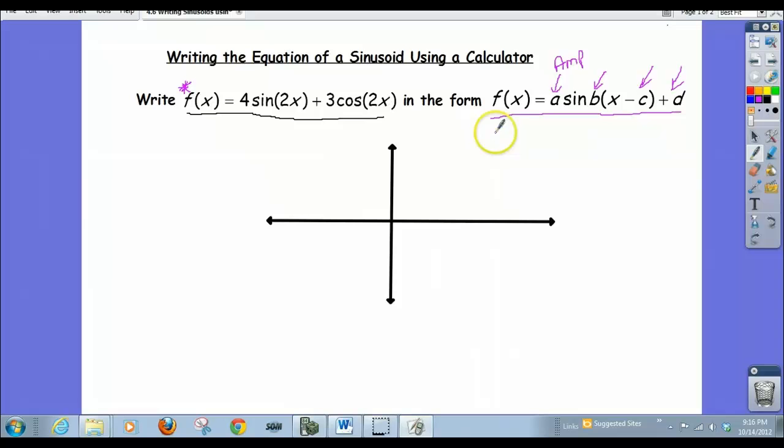So, if I'm going to write this as a sine graph, then it's going to be written as f of x equals, so I only need to know my A value. I'm writing it as a sine. I need to know my B value, I need to know the C value, and the D value.